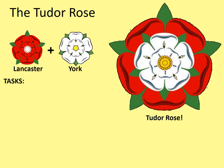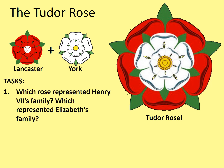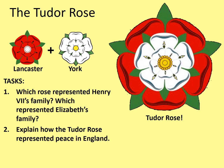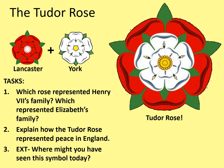Your tasks: firstly, which rose represented Henry VII's family and which represented Elizabeth's family? Secondly, explain how the Tudor Rose represented peace in England. Thirdly, as a challenge, where might you have seen this symbol today? It is still quite common — give it some thought. Pause the video while you answer those questions.